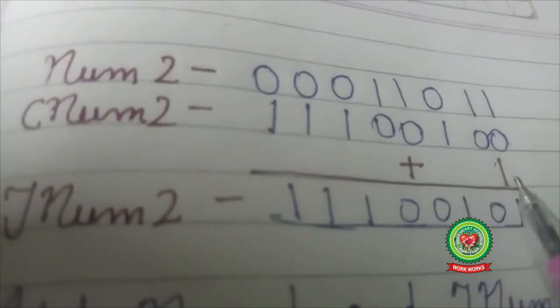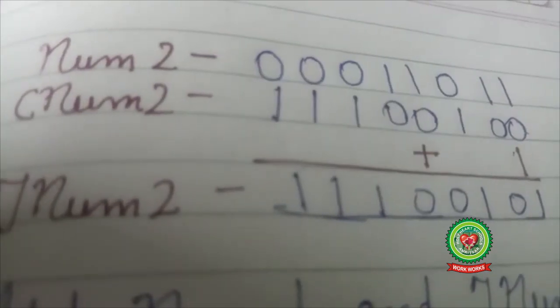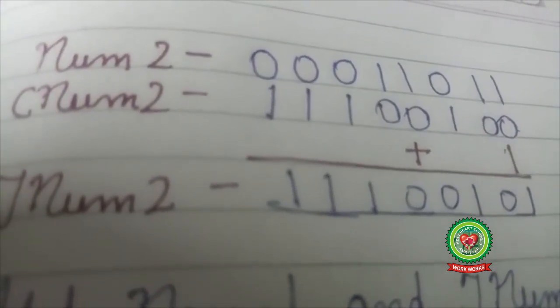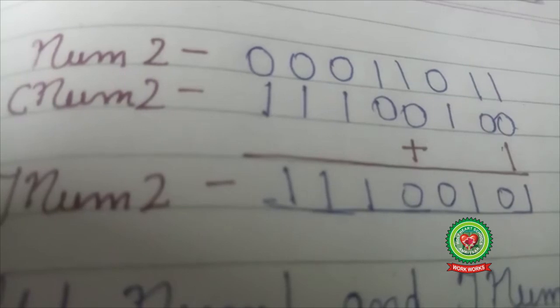Now I will add 1 to it. So my two's complement becomes 1 1 1 1 0 0 1 0 1.